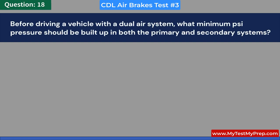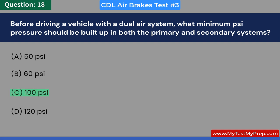Before driving a vehicle with a dual air system, what minimum PSI pressure should be built up in both the primary and secondary systems? A. 50 PSI. B. 60 PSI. C. 100 PSI. D. 120 PSI. Answer: C. 100 PSI.